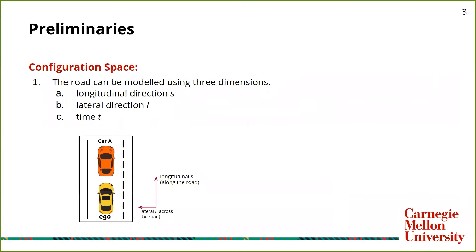A road can be modeled using three dimensions: the longitudinal direction S, which is the distance traveled along the road; the lateral direction L, which is analogous to different lanes on the road; and time T.